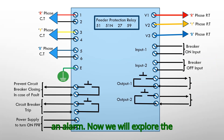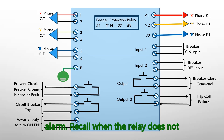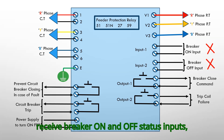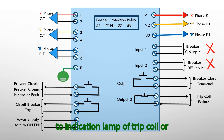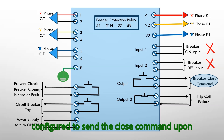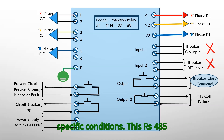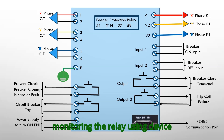Now we will explore the configured outputs: breaker close command and trip coil failure alarm. When the relay does not receive breaker on and off status inputs, it sends a trip signal from this output to the trip coil failure indication lamp. The breaker close command is built-in and programmable, configured to send the close command upon specific conditions. This RS-485 port enables connecting to a PC or laptop for configuration and monitoring the relay using device software.